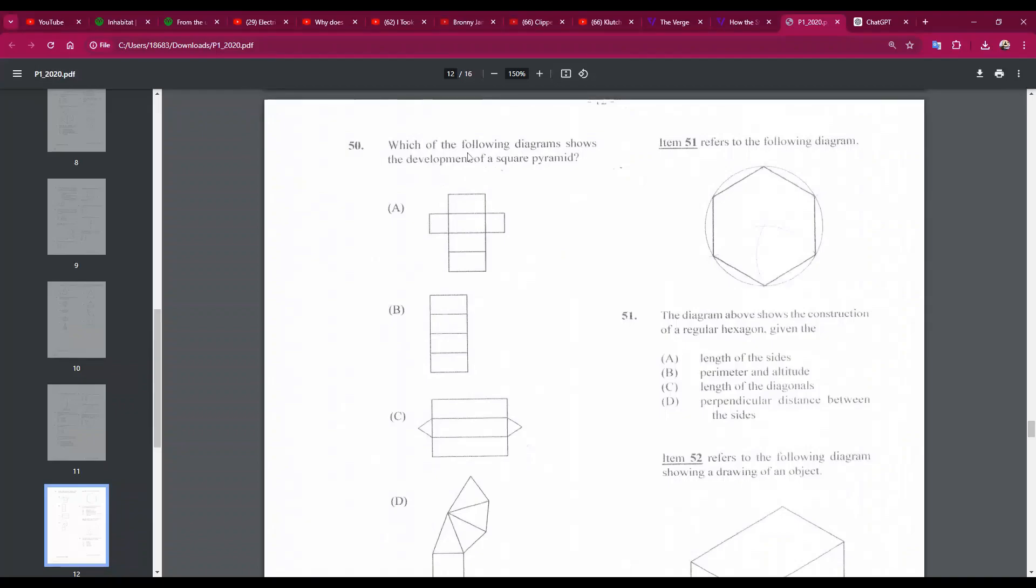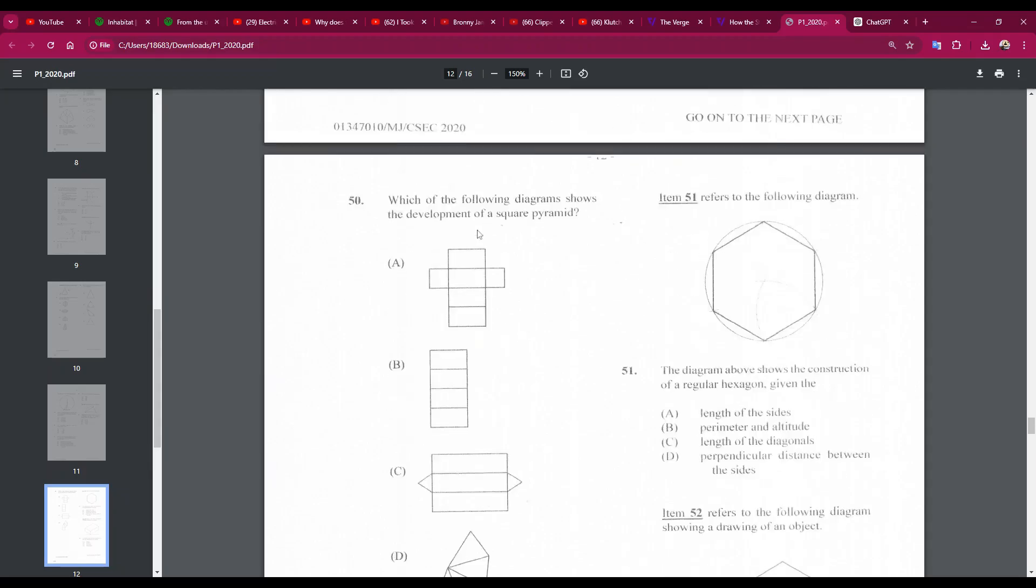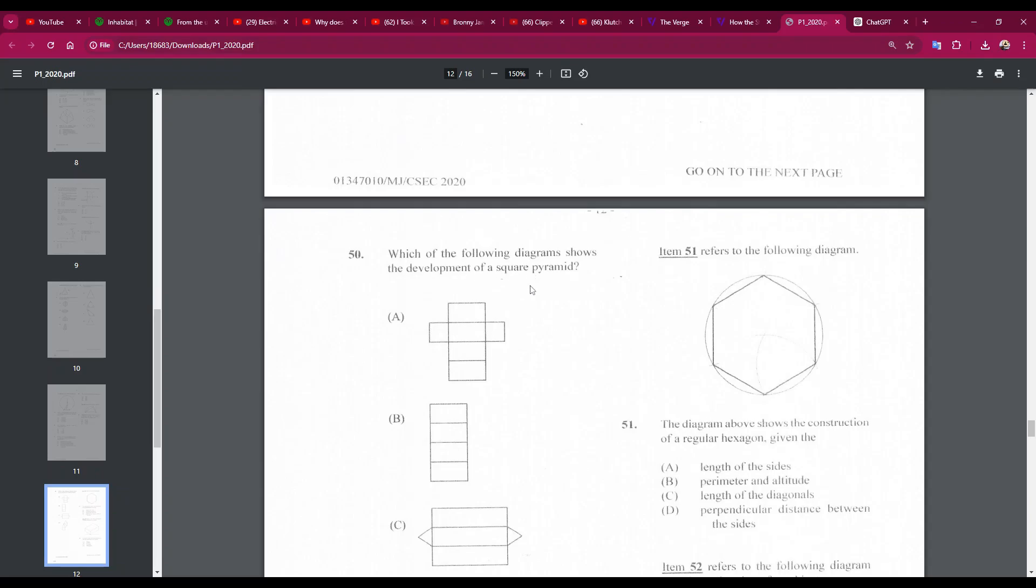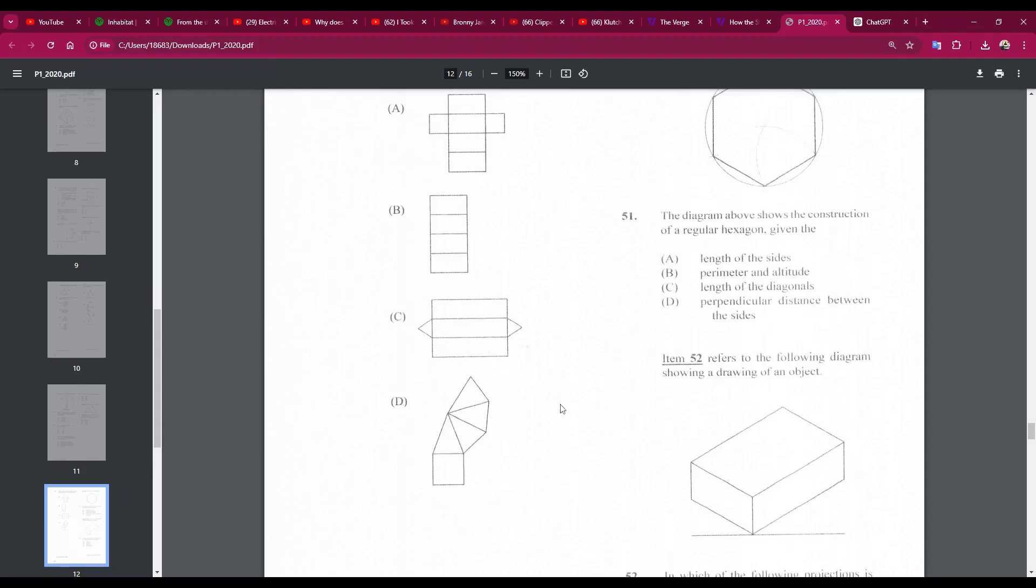Number 50: which of the following diagrams shows the development of a square pyramid? Okay, so the answer is D, a square pyramid. The answer is D. This is the only, actually, this is the only pyramid here to begin with, and the base is square. Okay, so number 50D.